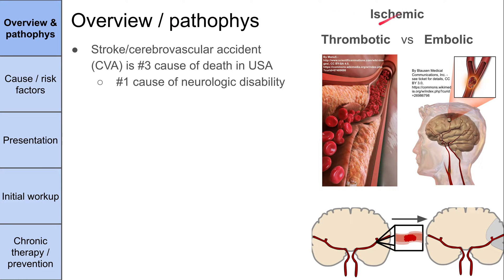Let's talk about the pathophysiology of ischemic strokes. There are two big categories: thrombotic and embolic strokes. Thrombotic strokes are similar to what causes a heart attack — this is atherosclerosis, a buildup of plaques on the inside of the arteries leading up to your brain. When those build up, it occludes blood flow. That's a thrombotic stroke. When this happens, the tissue downstream of the blood vessel dies — this is an infarction.